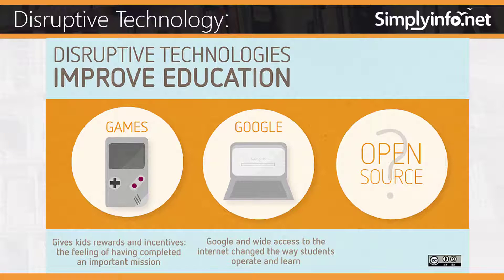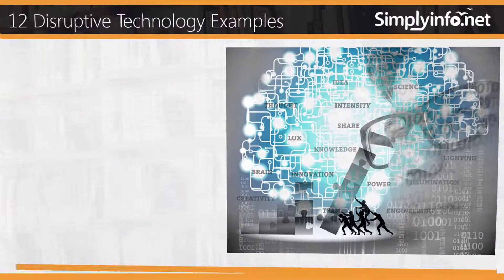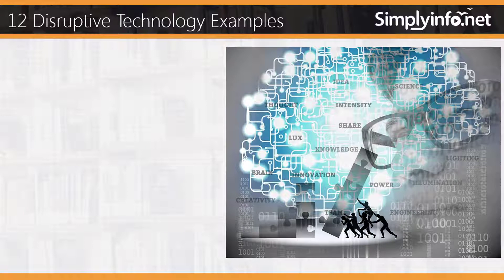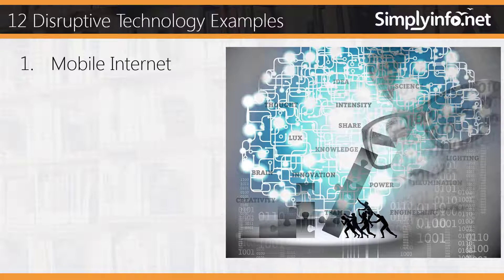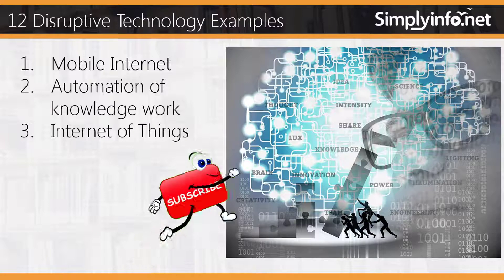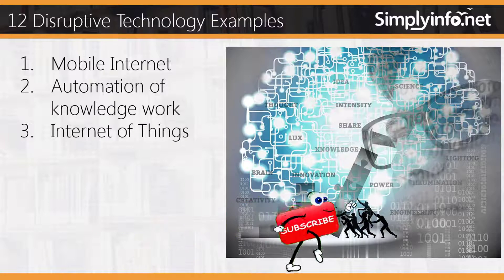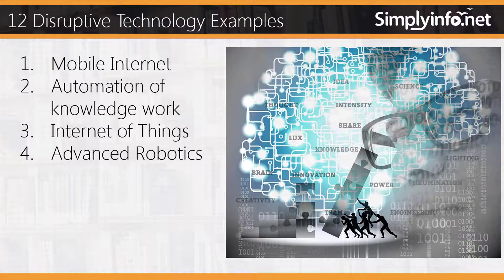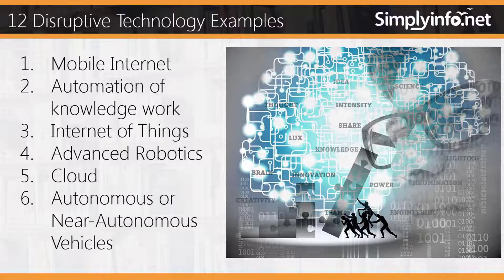Disruptive technology examples: one, mobile internet; two, automation of knowledge work; three, internet of things; four, advanced robotics; five, cloud; six, autonomous or near-autonomous vehicles.